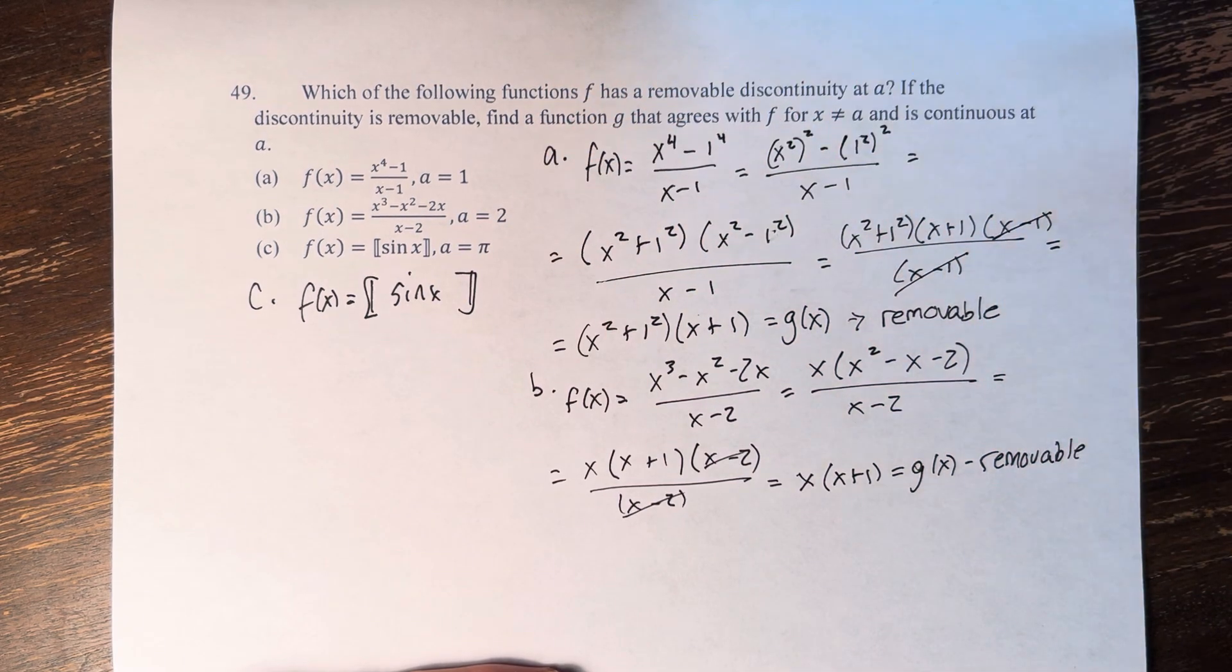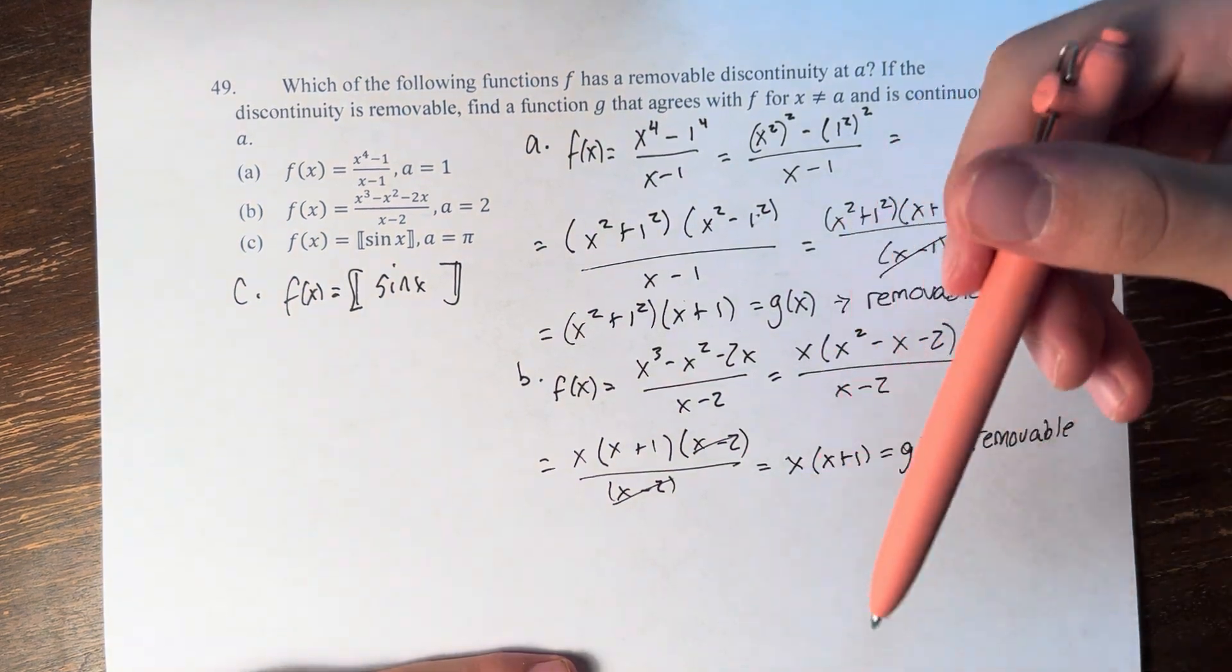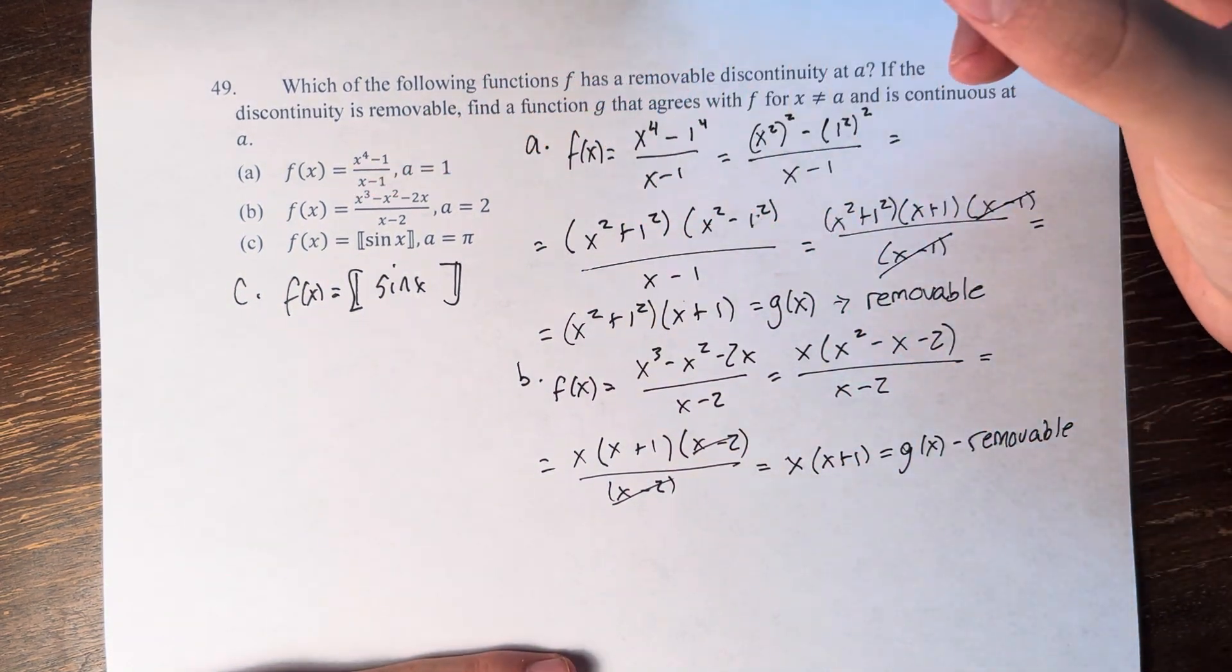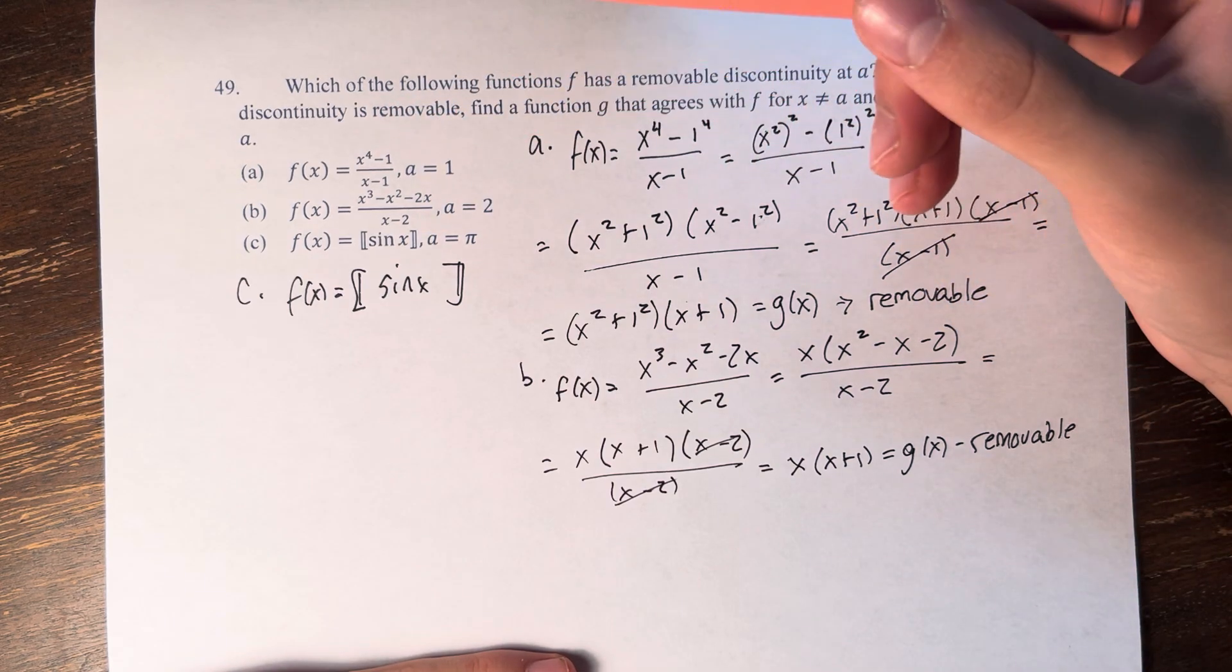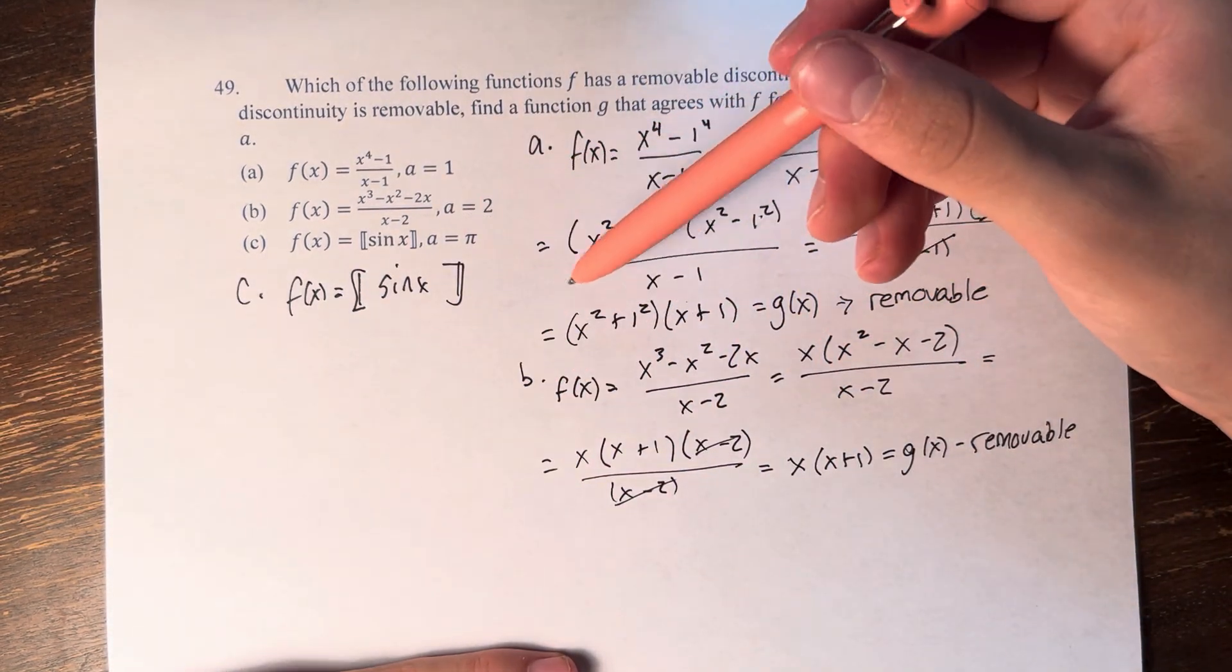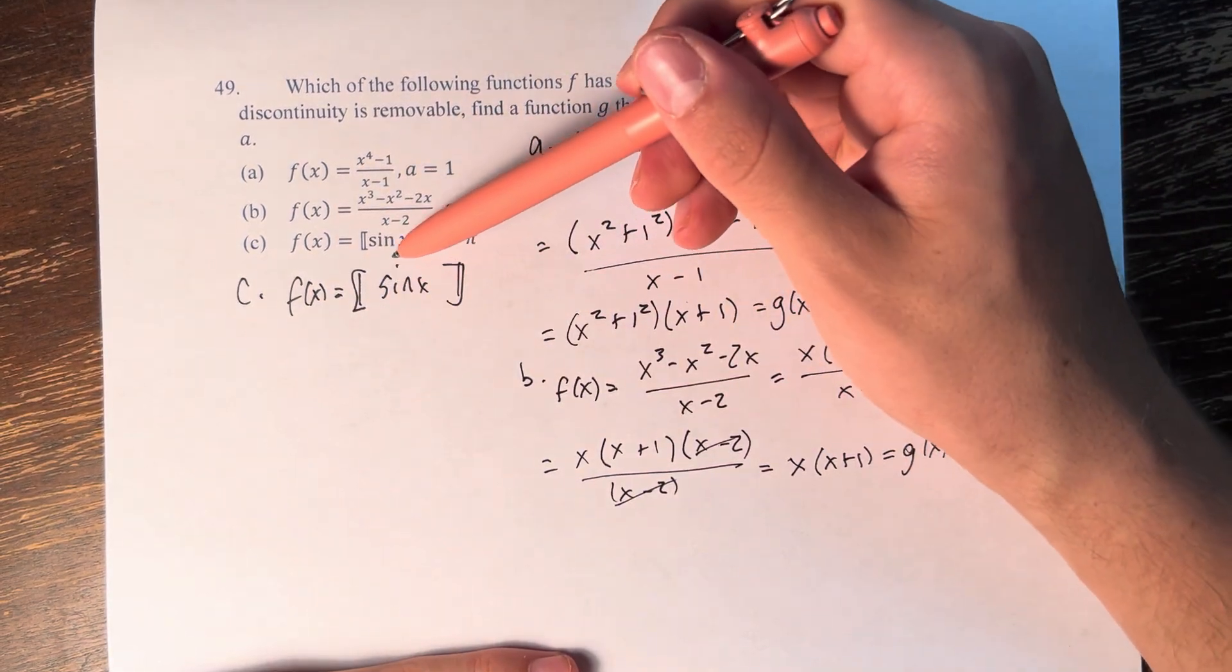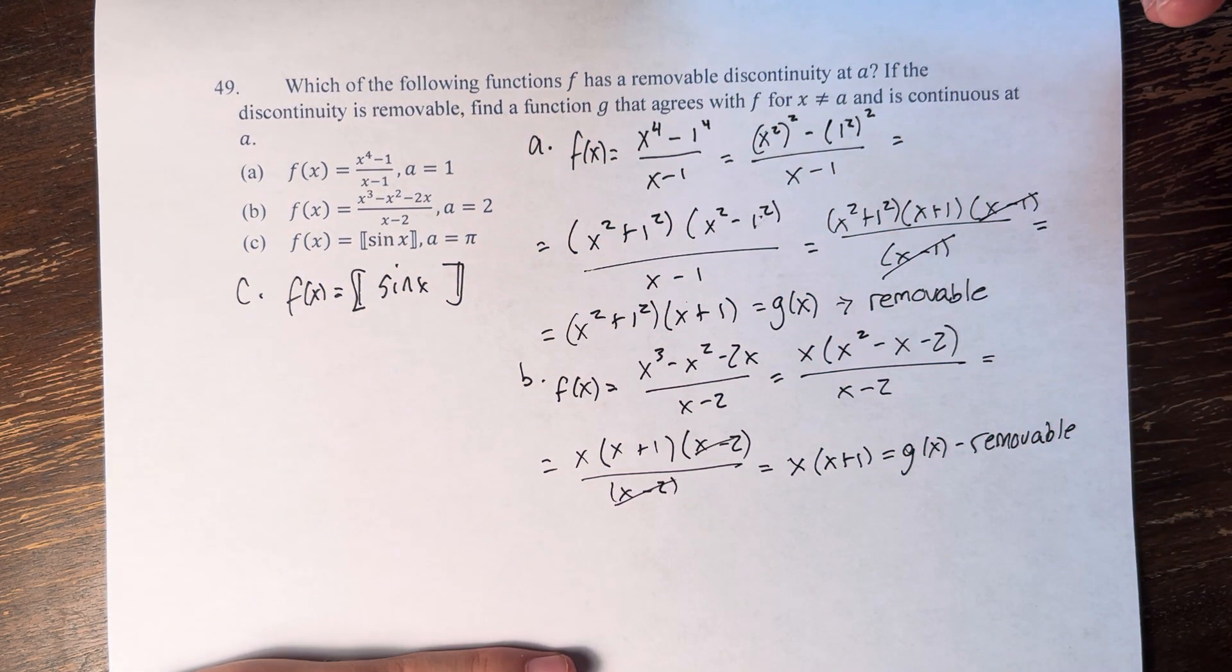So if you're at an integer, the greatest integer that's less than or equal to it is just the one that's equal to it. So at the integer values, this is just equal to sine of x. And then for all other values, it drops to the next lowest integer. So if sine of x is like 0.5, you plug in 0.5, the greatest integer that's less than or equal to 0.5 is 0.